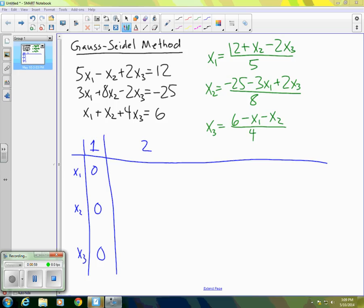So now let's go ahead and compute the second values of each one. When I'm computing the second value of x1, I use the most recent values of x2 and x3, which are both zero. So in that case, then x1 just gives us 12 over 5, which is 2.4.